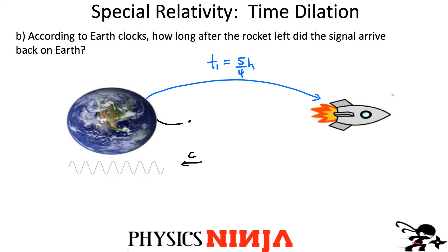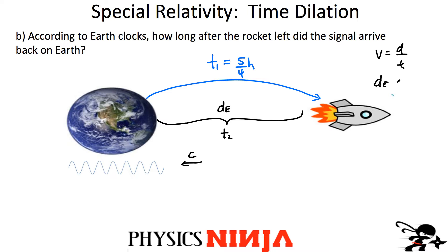We have to calculate how long it takes light to travel that distance — call this T₂, as measured by someone on Earth. We need the distance as measured by someone on Earth. Using speed = distance / time with no acceleration, the distance equals speed × time. The rocket was traveling at three-fifths the speed of light, so the distance as measured by Earth is (3/5)c × T₁.